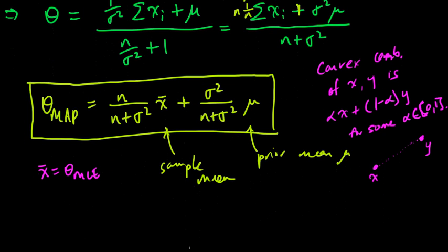So if our prior mean was here, and we got a sample mean over here, then as n and sigma squared vary, our MAP estimate is going to be somewhere in this range.